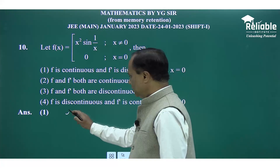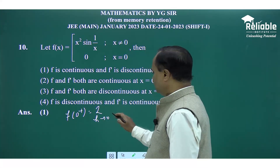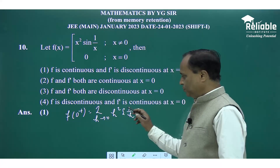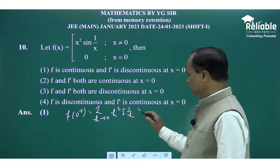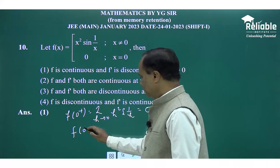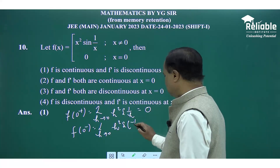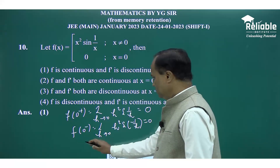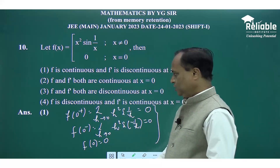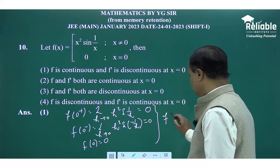First we find the right-hand limit at x = 0: f(0⁺) = limit h→0 of h² sin(1/h). Since sin(1/h) oscillates between -1 and 1, and h tends to 0, the right-hand limit equals 0. Similarly, the left-hand limit = limit h→0 of h² sin(-1/h) = 0. At x = 0 the value of the function is 0. So right-hand limit = left-hand limit = f(0), therefore f(x) is continuous at x = 0.